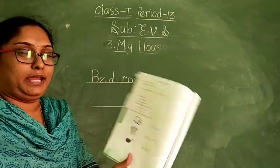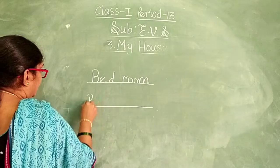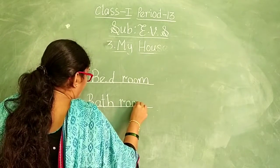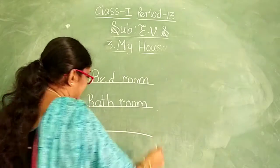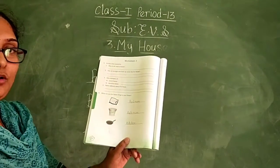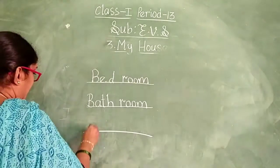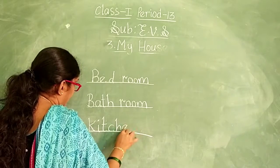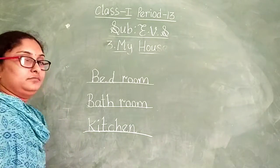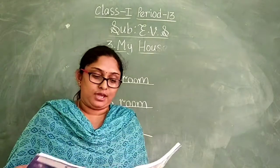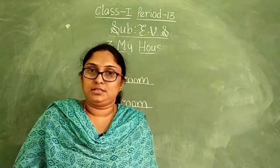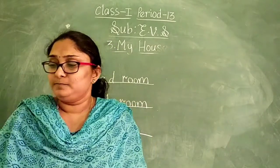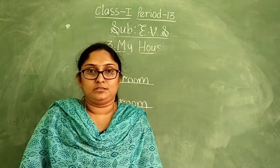Next picture: bucket. Bucket — where will we find it? In the bathroom. B-A-T-H-R-O-O-M, bathroom. Next picture: a frying pan, cooking pan. What room will we see it in? The kitchen — K-I-T-C-H-E-N, kitchen. Did you understand? Very good. You have to complete the fill in the blanks and true/false in your practice book.